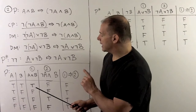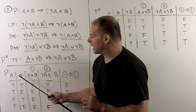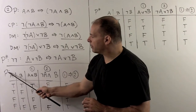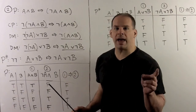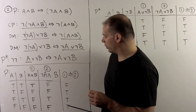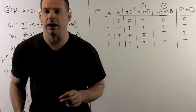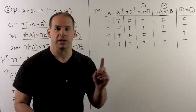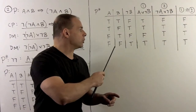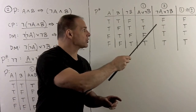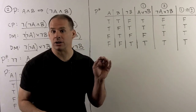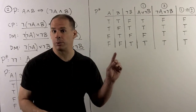We should check by comparing truth tables. For statement P, the truth table values are FALSE, TRUE, TRUE, TRUE. Working through P-star, we again get FALSE, TRUE, TRUE, TRUE. So our two statements are logically equivalent, as promised.